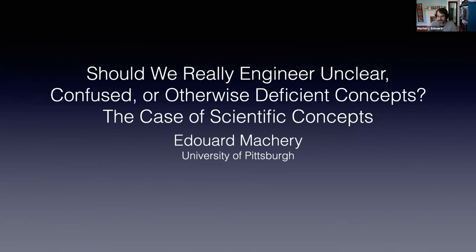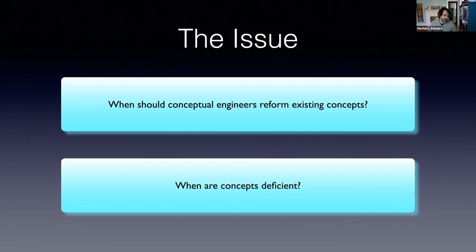The issue is to address the following question: when should conceptual engineers reform existing concepts? The answer seems obvious — when those concepts are deficient. A conceptual engineer should reform deficient concepts. But that answer pushes the debate only one step further. The next question is obviously: when are concepts deficient? What makes a given concept a deficient concept?